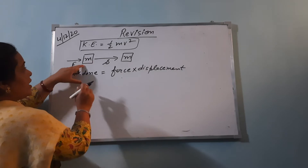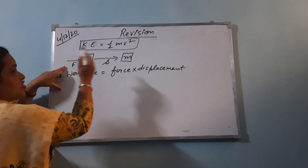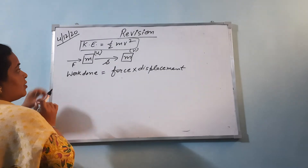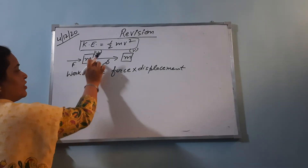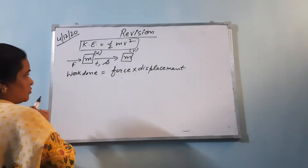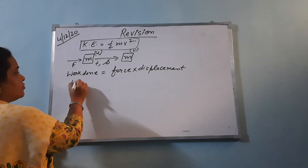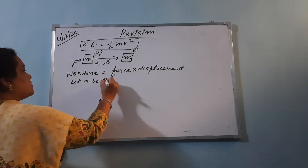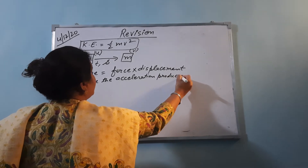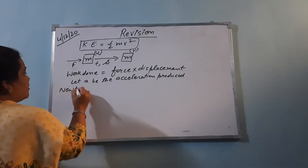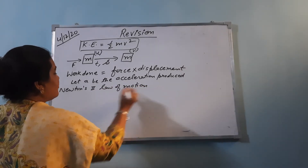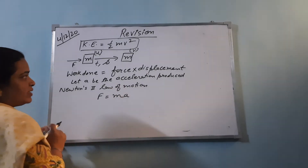W equals F into s. Now when we apply the force, there is a change in velocity — the initial velocity u will change to final velocity v, because the body is already in motion. When there is a change in velocity it will take some time, so acceleration is also produced. Let a be the acceleration produced. By Newton's second law of motion, force is the product of mass and acceleration: F equals ma. Let us take this as equation one.